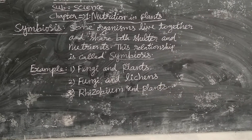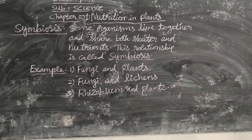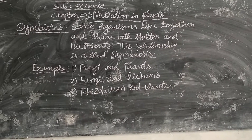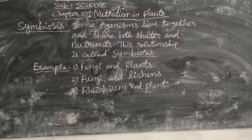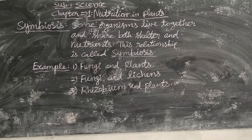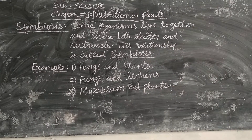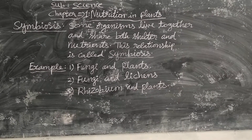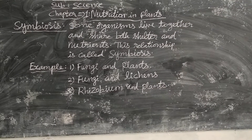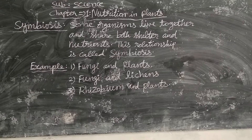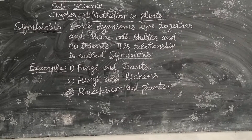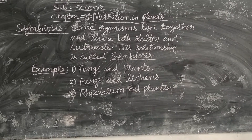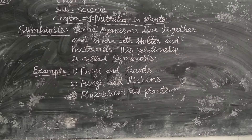Third example: Rhizobium and Plants. These two also live together. Rhizobium is a bacteria present in the soil. This rhizobium bacteria absorbs nitrogen from the atmosphere and supplies it to the plants. Plants take nitrogen from the rhizobium bacteria, prepare their food, and in turn provide food and shelter to the rhizobium bacteria. So in this way, two organisms live together, share food and shelter — this is called symbiosis.